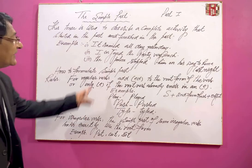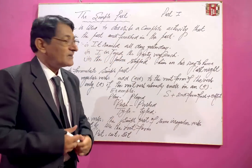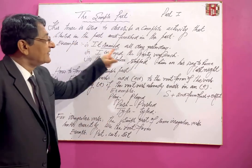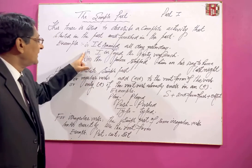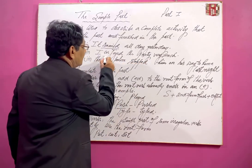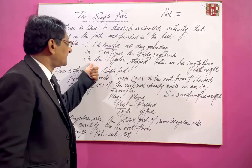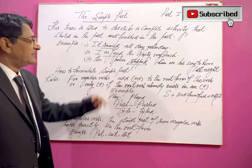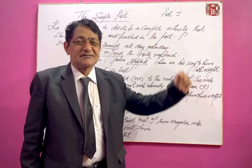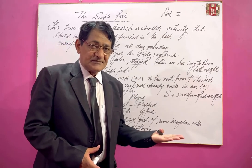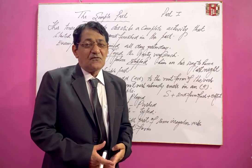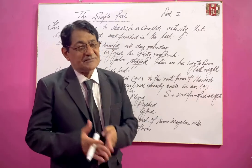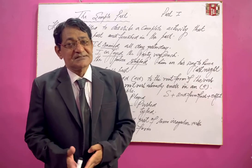Here are some examples: 'It rained all day yesterday' — using the second form of the verb. 'I enjoyed the party very much' — using the second form of the verb. 'The police stopped him on his way home last night.' These examples show simple past tense — all the actions started in the past and finished in the past, so we use simple past tense in that case.